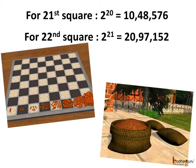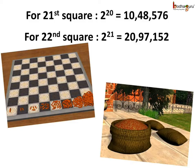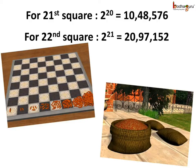Thus, he would get 2 to the power 20, or 10,48,576 grains, for the twenty-first square. For the twenty-second square, he would get double of it, which is 2 times 10,48,576, amounting to 20,97,152 — that is 2 to the power 21. As he was receiving grains for all the squares, the grains for all the squares would sum up to a monstrously huge number, which was not available even in the whole kingdom.